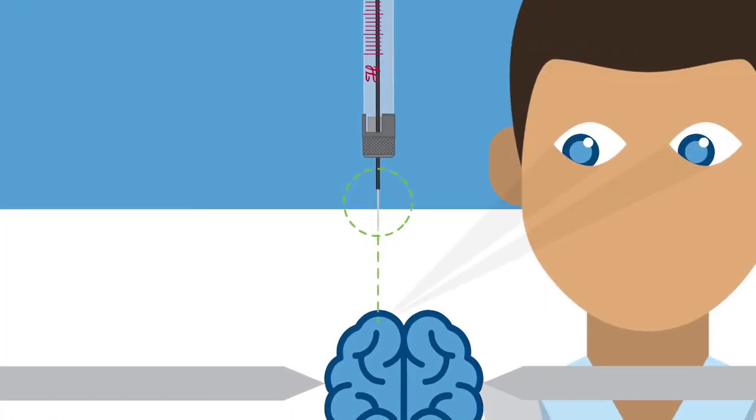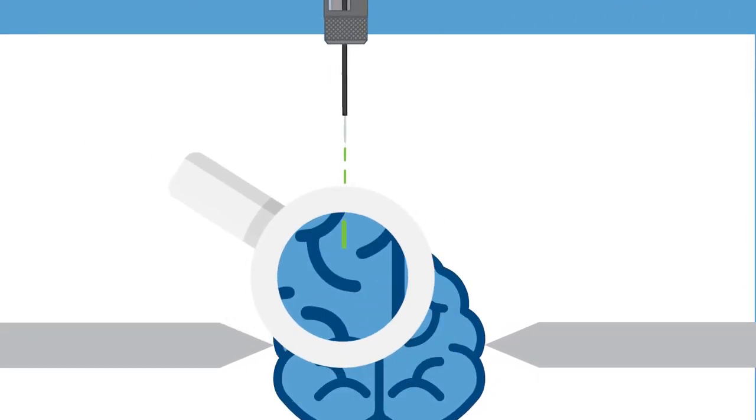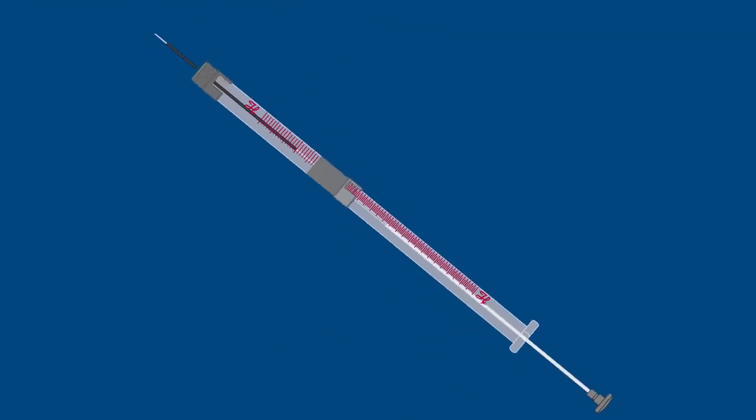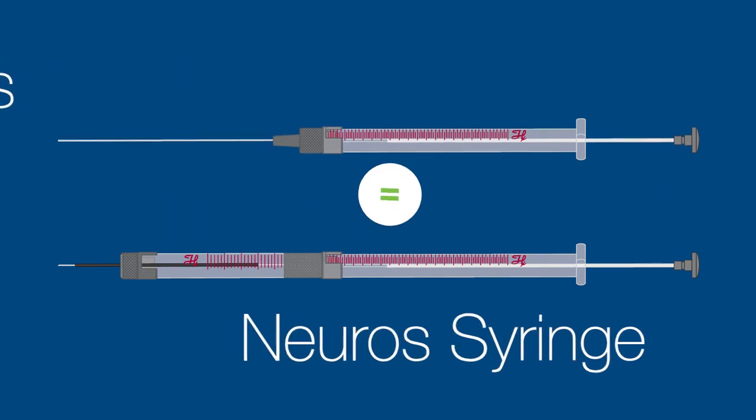An adjustable sleeve improves visibility of the injection site and maintains the needle's rigidity while exposing just enough length to reach the injection site. The overall length of the syringe is the same as the 7000 series, making it compatible with all existing stereotaxic frames and pumps.